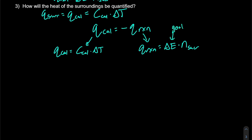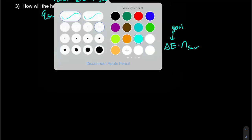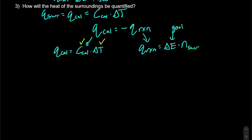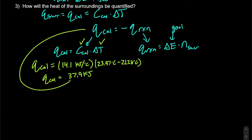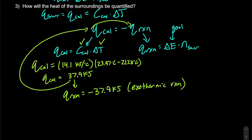Our goal is to identify delta E, which we don't know. However, we do know our heat capacity and our change in temperature. So let's calculate Q_calorimeter: 14.1 kilojoules per degree Celsius times the temperature change from 21.28 to 23.97 degrees Celsius gives us Q_calorimeter equals 37.9 kilojoules. That means Q_reaction is equal and opposite: negative 37.9 kilojoules. Again, this is another exothermic reaction — we're releasing heat when this reaction occurs.